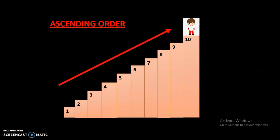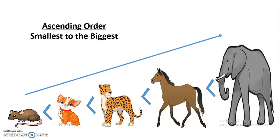In ascending order, the numbers go on increasing or become bigger and bigger. In this picture, you can see the smallest animal is rat and the biggest animal is elephant. From smallest to the biggest, we call it ascending order.